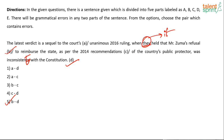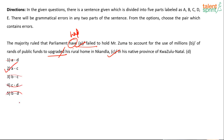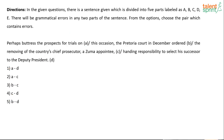Next question: 'The majority rule that parliament have failed to hold Mr. Zuma to account for the use of millions of rands of public funds to upgraded his rural home in KwaNdebele in his native province KwaZulu-Natal.' 'Parliament have' should be 'parliament had,' and 'to upgraded' should be 'to upgrade.' The errors are in A and C.